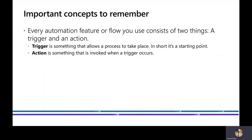Before getting started with Microsoft Power Automate, there are two important concepts to remember: trigger and action. The trigger is the starting point — something that allows the process to take place. You need something to initiate the automation process; otherwise the automation is pointless. When a trigger is invoked, an action takes place.